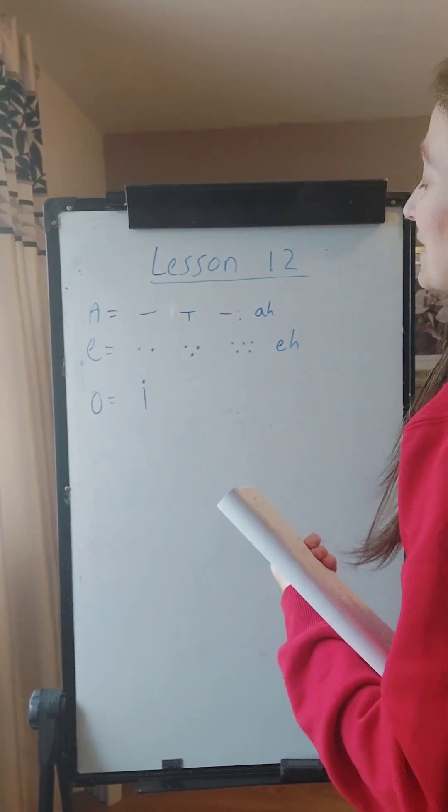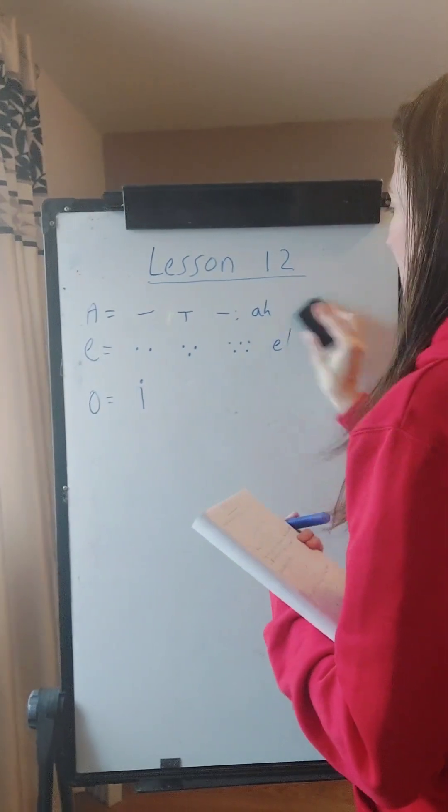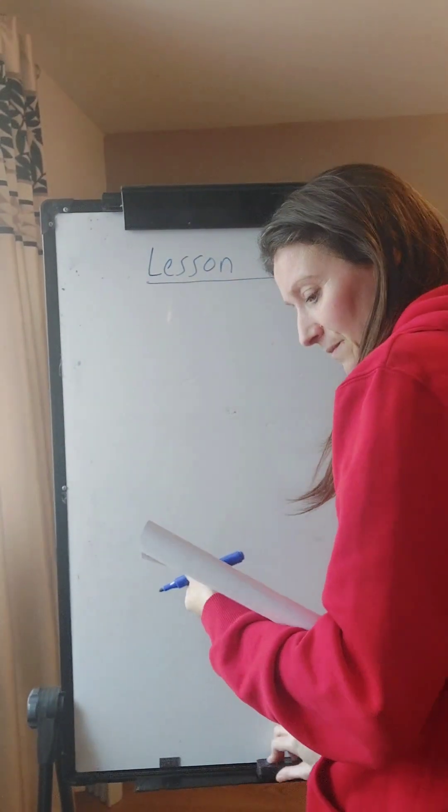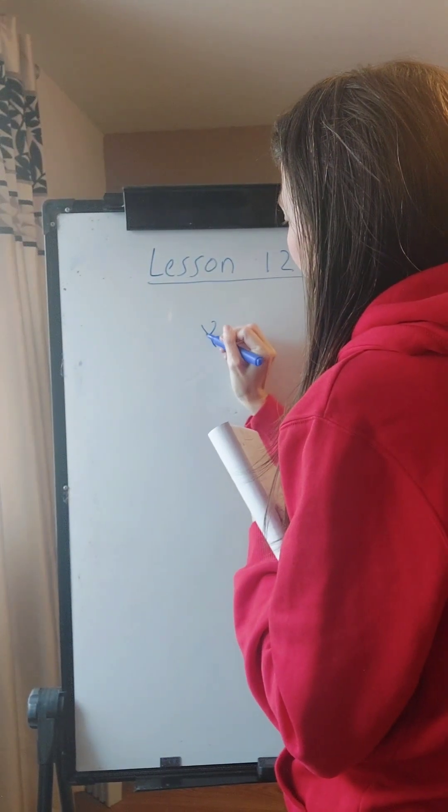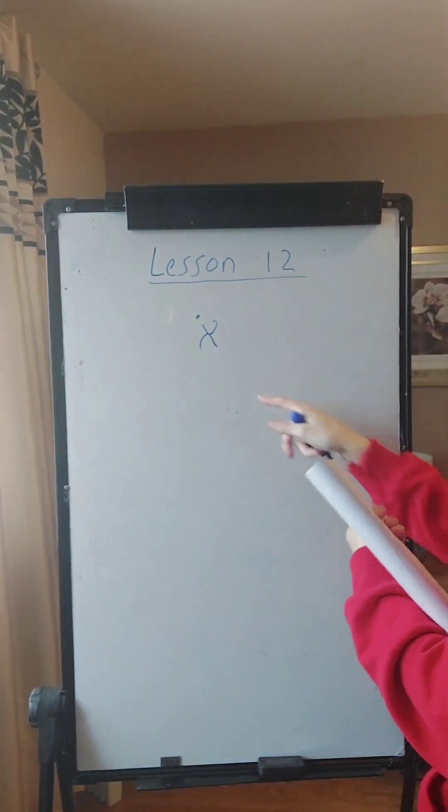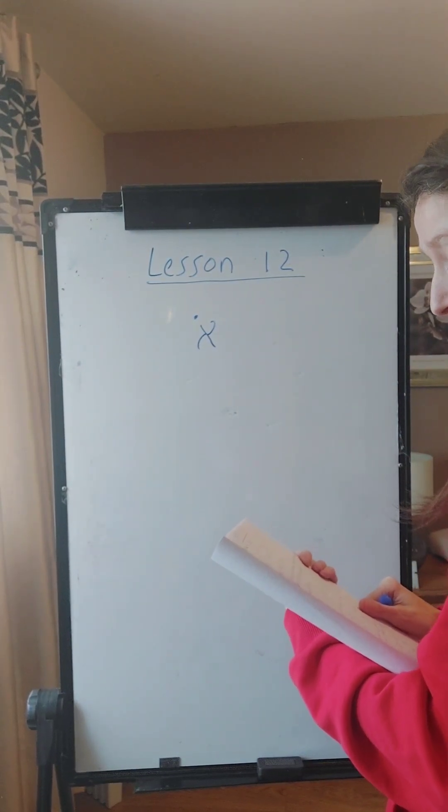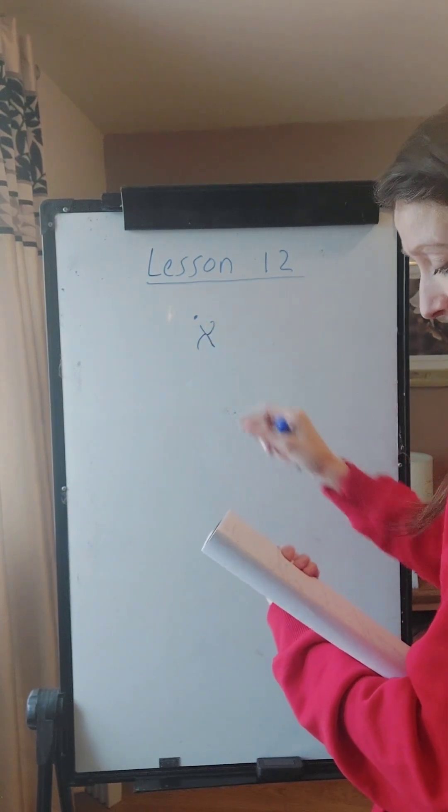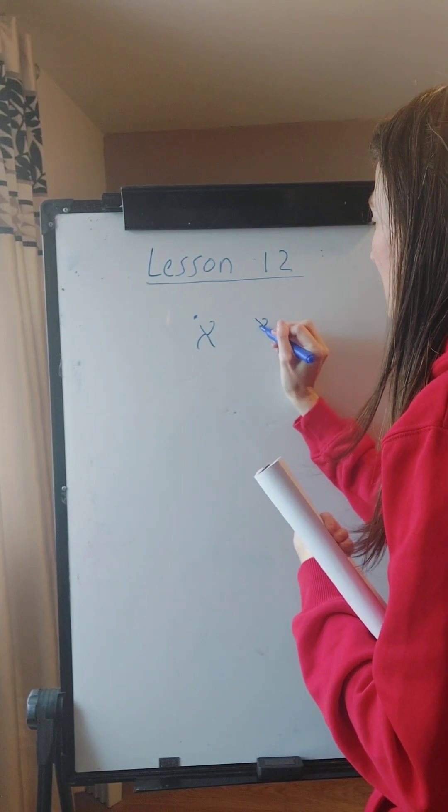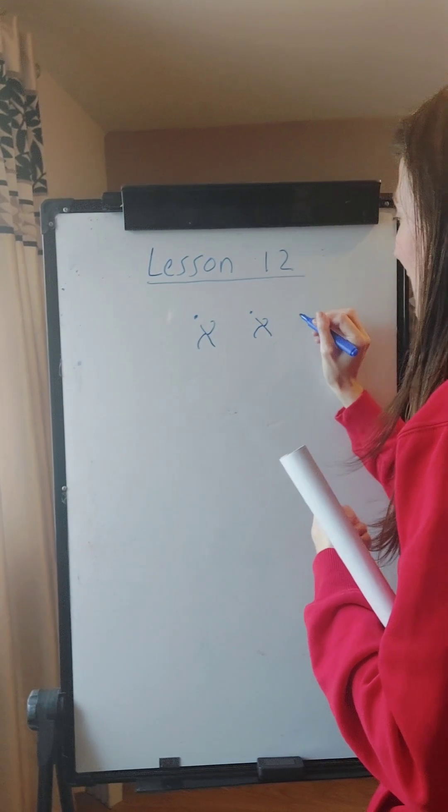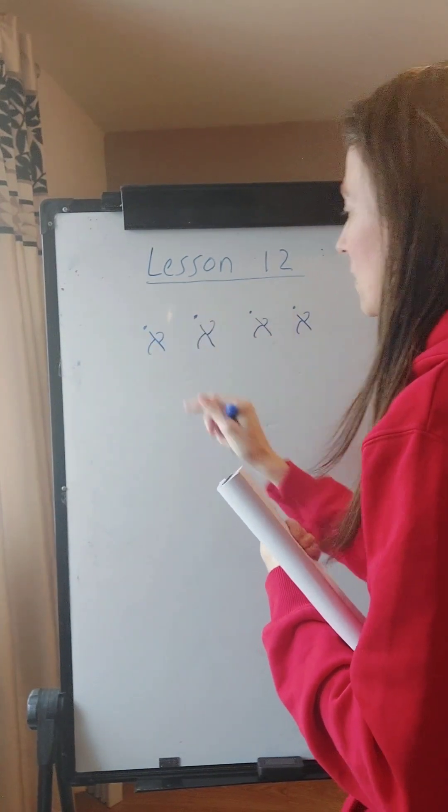So today we're going to learn the second O vowel. So this is a new vowel and I'm going to use the Alef to show how it's written. So this is the other O vowel. The dot is over the consonant. The dot of the O is on the left of the consonant. So practice writing the O and saying the sound. So we'll just use the Alef because it's a silent letter. So O, O, O.